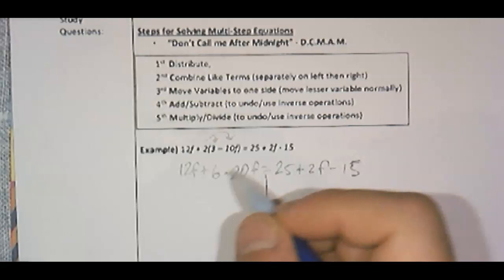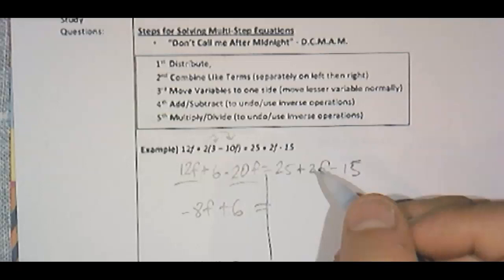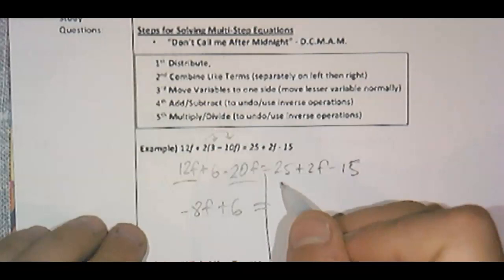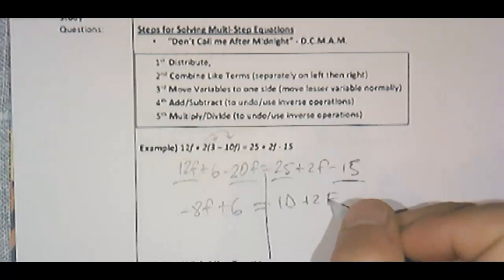And then the next step is combine like terms separately on the left and the right. In fact, let's make sure we put that line down so we can verify the right and left. So combine like terms on the left side. You have 12f minus 20f. That's negative 8f. Bring down the plus 6. And then over here, remember, you combine like terms on the left side and combine like terms on the right side. So your like terms here are 25 minus 15. 25 minus 15 is 10. The plus 2f just comes along for the ride.